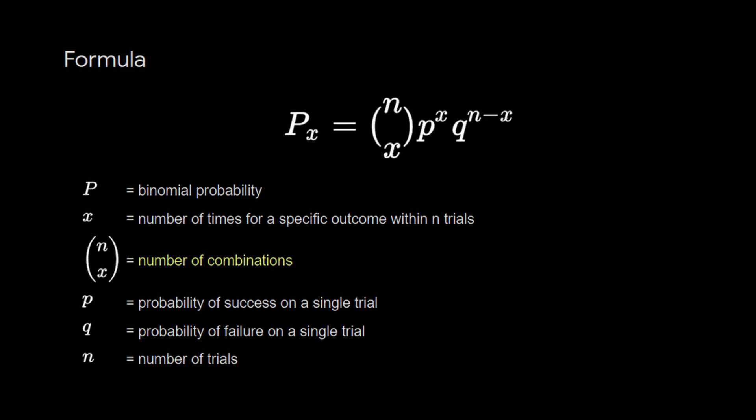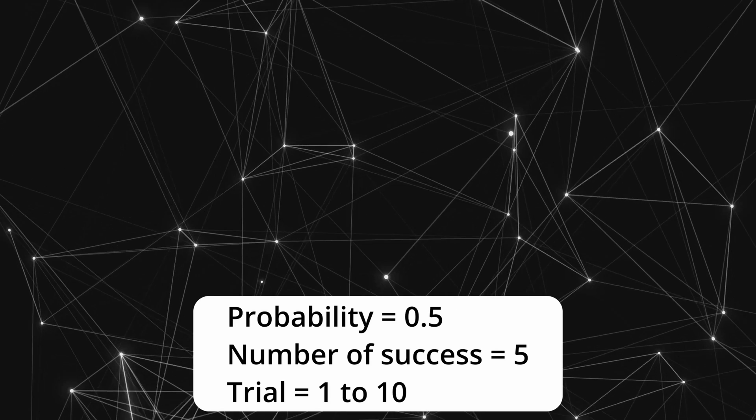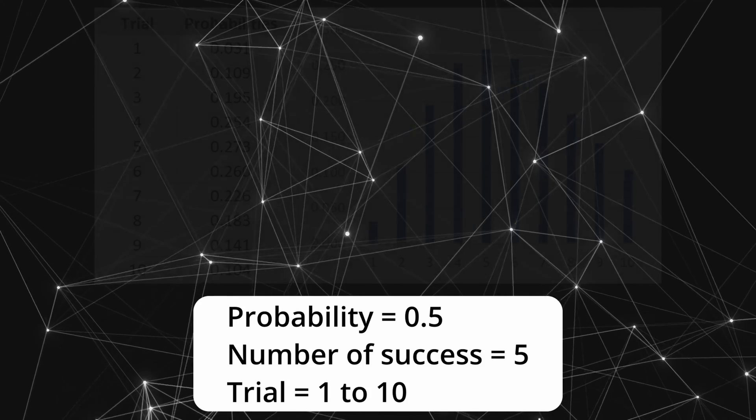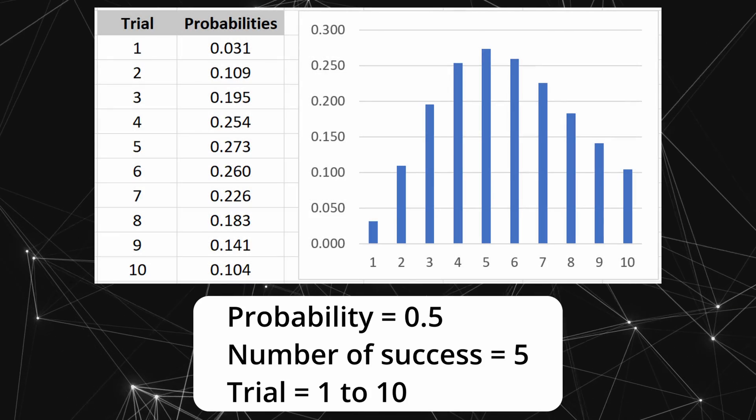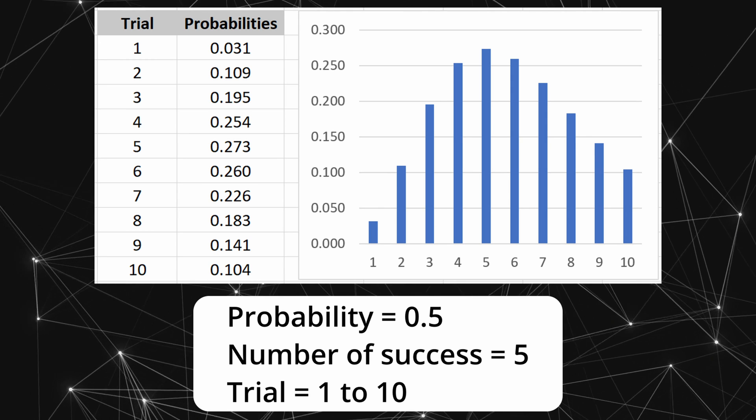In binomial distribution just now, you determine the probability of a certain number of successes observed in n number of trials. On the other hand, in negative binomial distribution, your random variable now is the number of trials to get a certain success. For example, assuming the world is 50% female, what is the probability that the second, fourth, sixth, or eighth people met is going to contain five females?